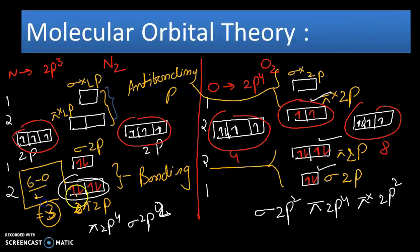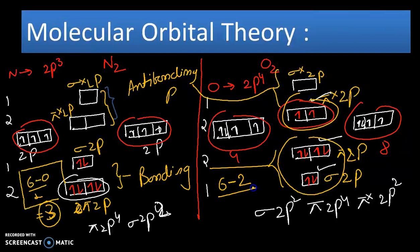In case of oxygen, there are six bonding electrons and two anti-bonding electrons, so six minus two by two equals four by two, which equals two. So the bond order for oxygen molecule is two.